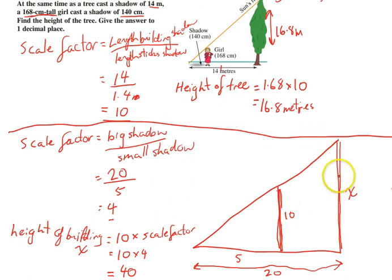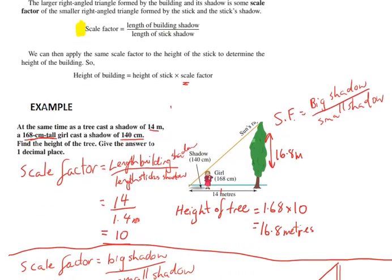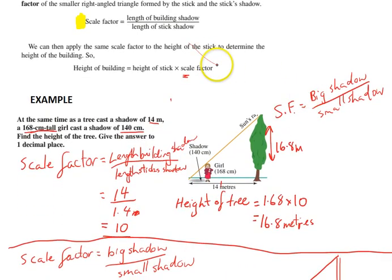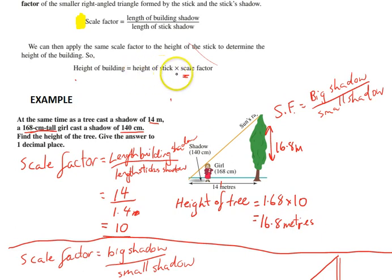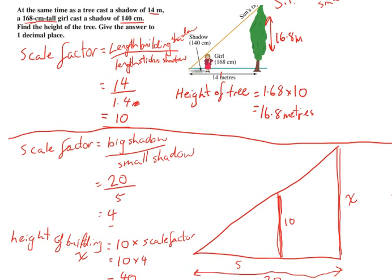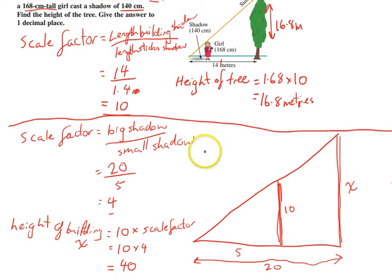So there are really only two formulas to learn: scale factor equals length of big shadow divided by length of small shadow, and height of building equals height of stick times the scale factor. If you've watched those two examples and taken plenty of notes, you shouldn't have too much trouble with those questions.